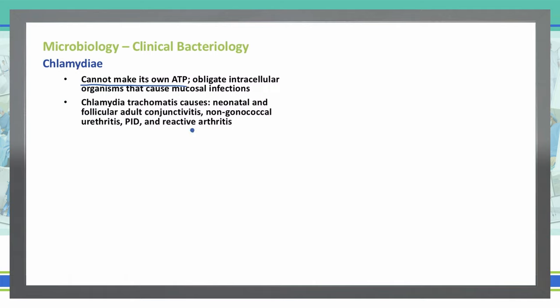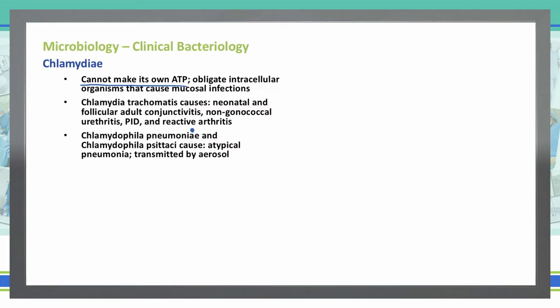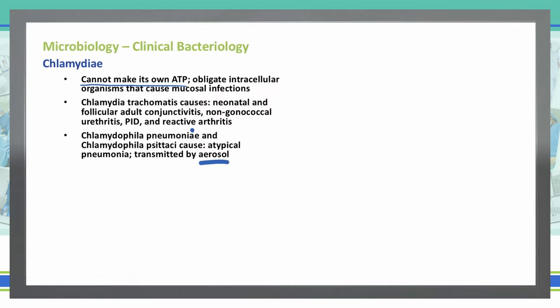There are a couple of other chlamydia organisms that cause different things. Chlamydia pneumoniae and Chlamydia psittaci both cause atypical pneumonia, and these are transmitted by aerosol. So we can have two different types of chlamydial infections depending on how they're transmitted — sometimes sexually, other times through the air.